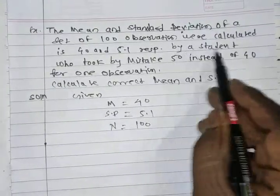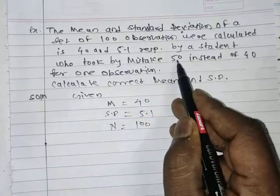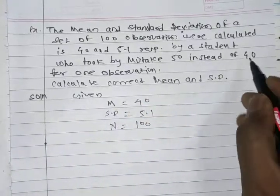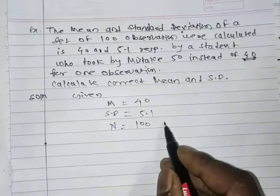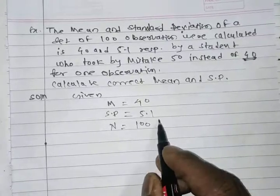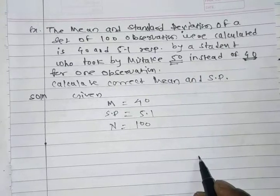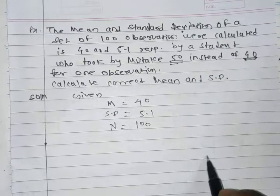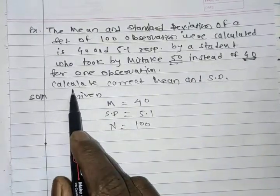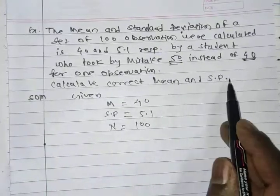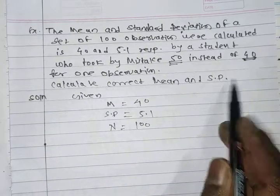By mistake, a student recorded 50 instead of 40 for one observation. The actual entry should have been 40. We need to correct the data and calculate the correct mean and standard deviation.